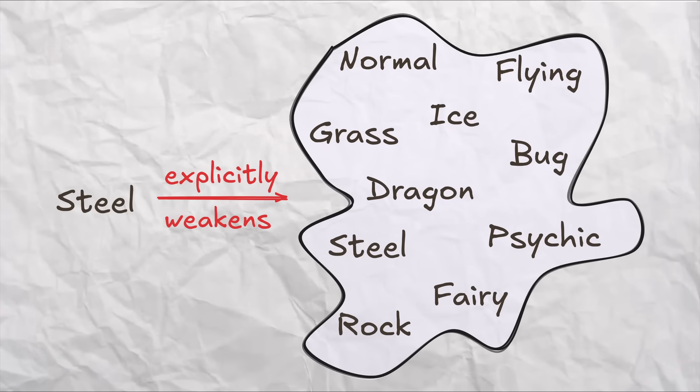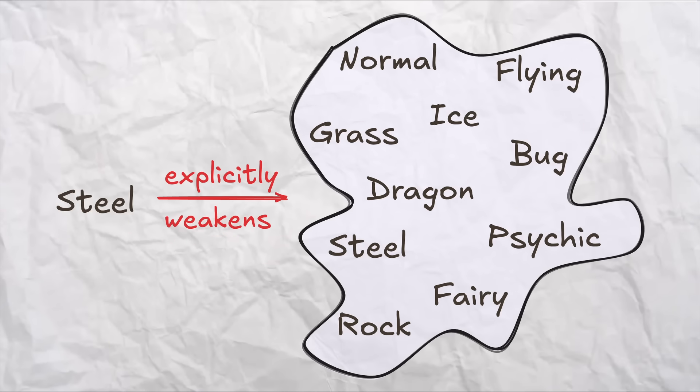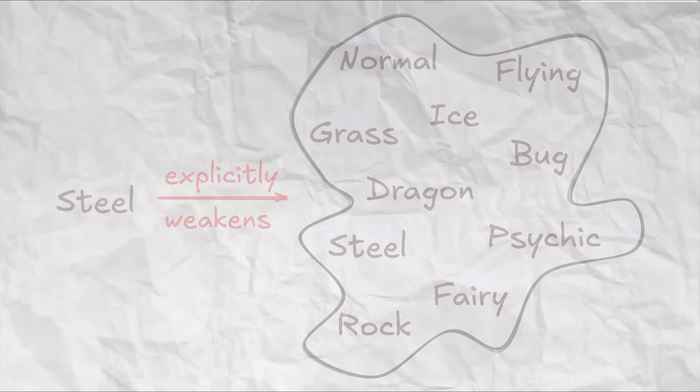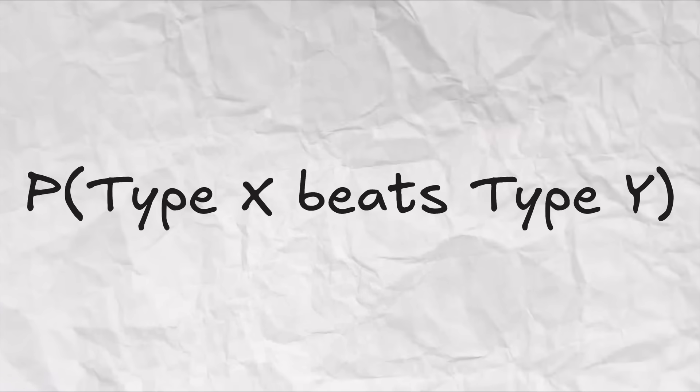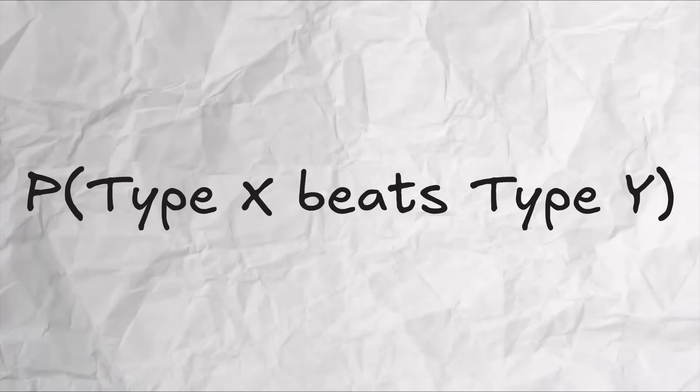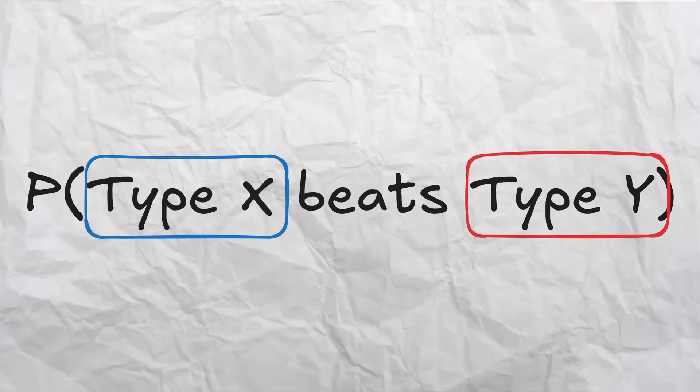In the comments, there was a lot of good proposed ways on how to combine offensive and defensive relationships, but I think the best and most elegant one was in this comment by Josh7627, which reframes the problem by asking what is the probability that a pokemon of some type x beats a pokemon of any other type y, and we define this probability using the values in the type chart.